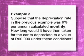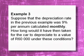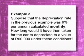Suppose that the depreciation rate in the previous example was nine percent per annum, calculated not annually but monthly. That is a really nasty question. For monthly compounding, we divide the interest rate by 12 and multiply n by 12. Teachers are seriously going to ask these kinds of questions, so let's look at how we approach this.